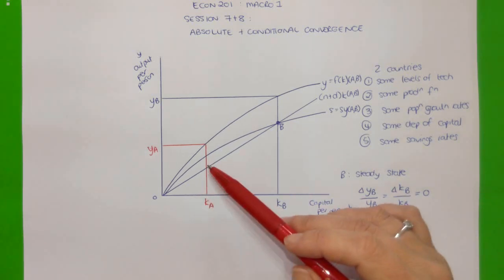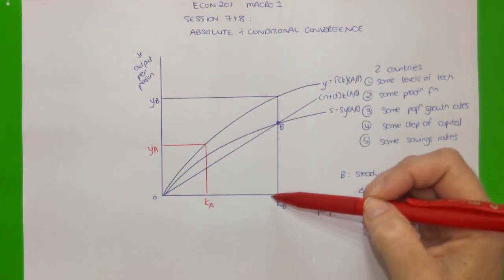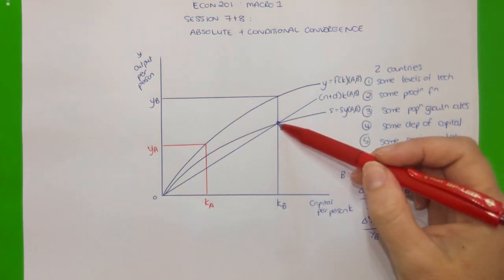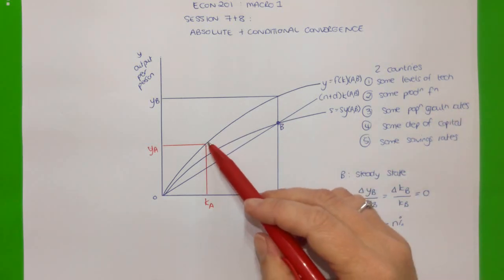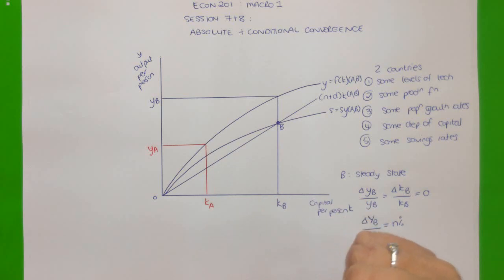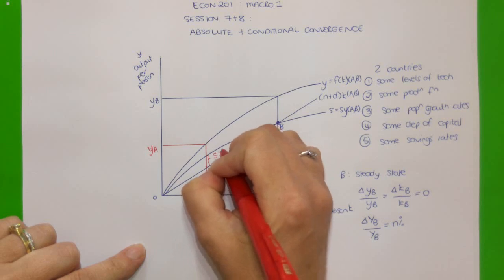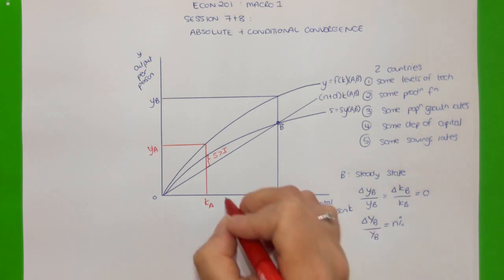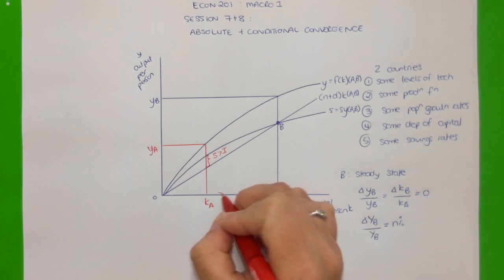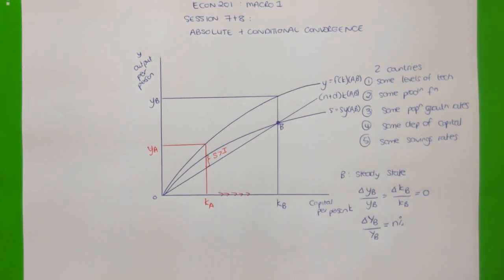However, country A would still be able to increase its output per person by increasing its capital per person, whereas country B is in steady state. The reason why country A is able to continue to increase its capital per person is that savings per person exceeds investment per person in country A. This means there's an excess pool of funds available that firms can borrow from, and as they do so, they can expand investment and the capital-to-labor ratio increases.